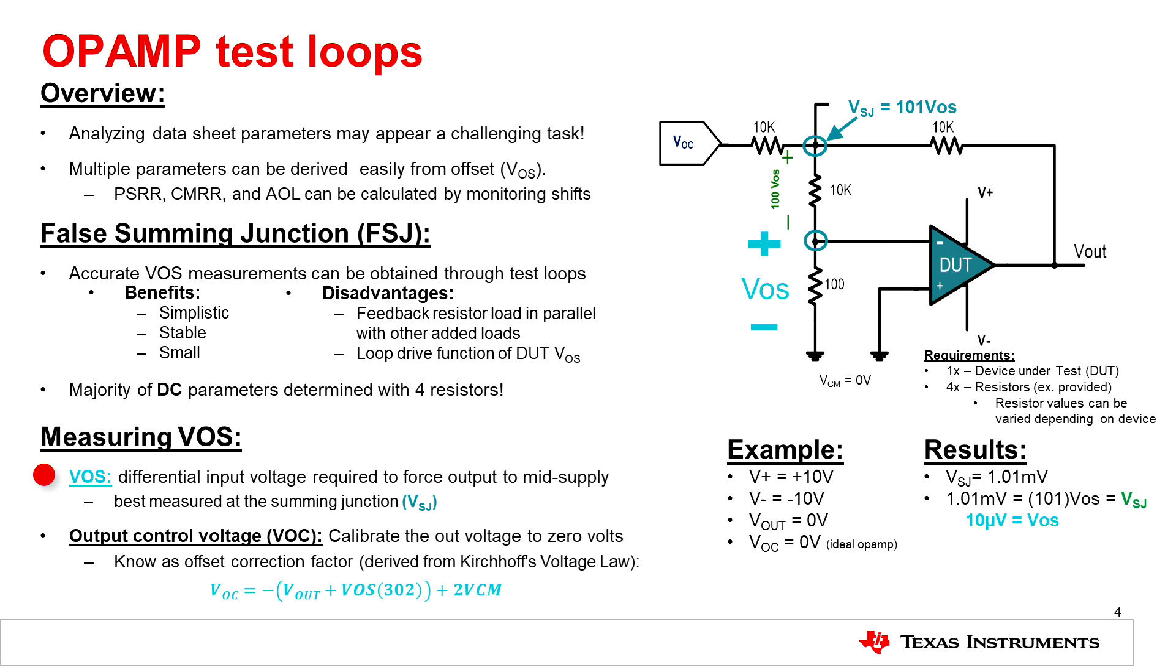Offset voltage is defined as the input differential voltage required to force the output to mid-supply. This is best measured in the false summing junction at the false summing junction node provided in the upper right-hand corner of the screen at V sub J of S. An offset voltage equation is provided at the bottom of the screen. This equation is derived from Kirchhoff's voltage law using the schematic provided. In this example, we see that the offset is approximately equal to 10 microvolts.